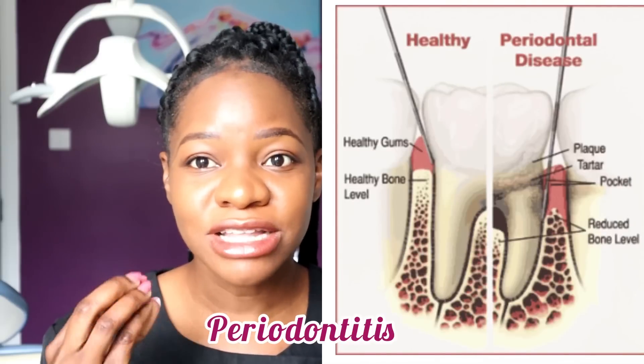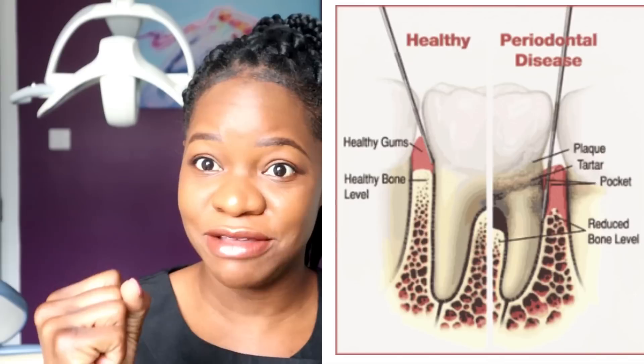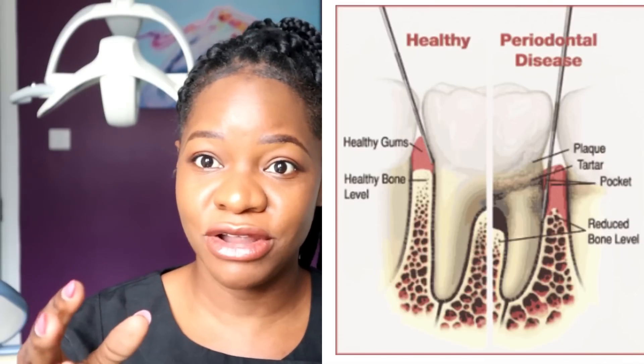That means you're starting to lose some of your bone that holds your teeth in place because of the bacteria that is sitting around the gum margins. When the bacteria sits around the gum margin, it then works into the teeth, resulting in pockets which are called periodontal pockets. Those pockets then show us that you've got periodontitis.